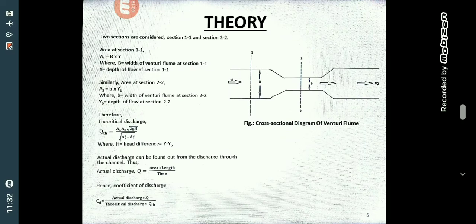Now we can calculate the coefficient of discharge using these equations. Here the cross-sectional diagram of venturi flume is shown. Two sections are marked: section 1 at the upstream side of the flume and section 2 at the throat of the flume.